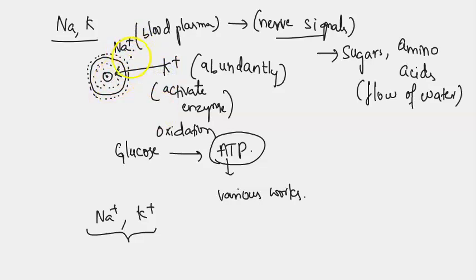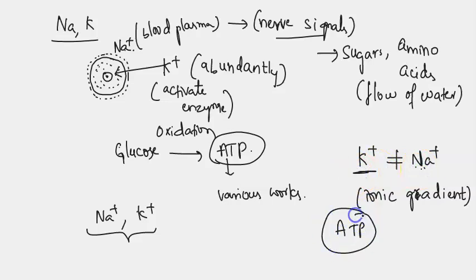Due to the difference in the concentration of potassium and sodium ions, there is an ionic gradient. To maintain that concentration of potassium and sodium inside and outside, some of the ATP energy is used. Even though an animal or human being is at rest without doing any work, ATP or energy is used up.